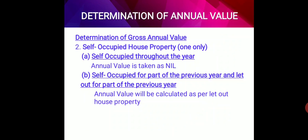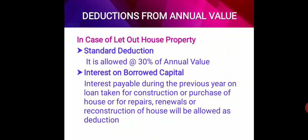Deductions from annual value: the Income Tax Act allows certain deductions from the annual value of house property. For let out house property, there are two deductions. One is a standard deduction at the rate of 30% of the annual value. The second is interest on borrowed capital — whatever interest is paid or payable during the previous year on a loan taken for construction, purchase, repairs, or renewals of the house is allowed as deduction.